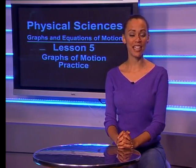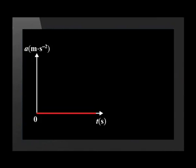The last thing we were asked to do is draw an acceleration-time graph. Since the boy runs at a constant velocity, this graph is a very easy one to draw. The acceleration versus time graph is a horizontal line with a zero gradient going through zero.